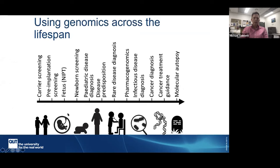This is just to remind you where we're at in our life spectrum. We started with carrier screening in couples wanting to become pregnant, pre-implantation genomic screening, fetuses, prenatal screening, newborn screening, and went on to talk about paediatric diseases. Last month we spoke about general testing in adults. And now we're at this end of the spectrum looking at cancer, which can occur in any age group but is more common in the older population.